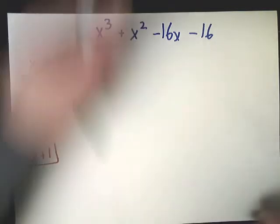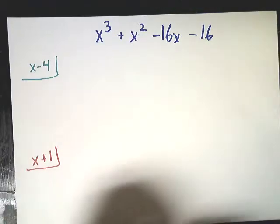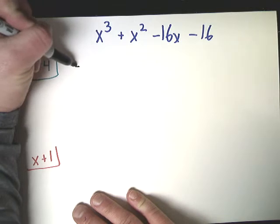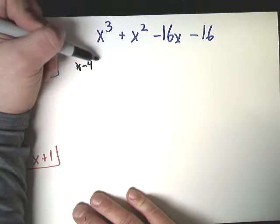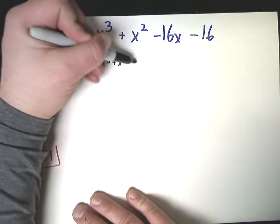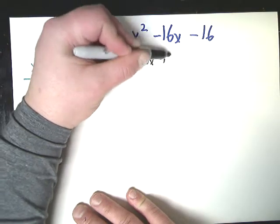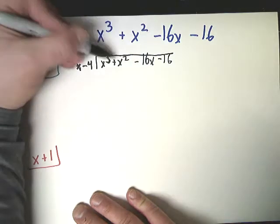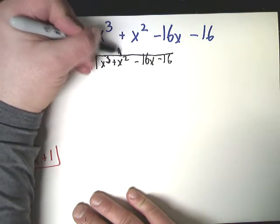So the first one, is x minus 4 a factor of this big polynomial at the top. So I'll do x minus 4. It doesn't go in here, but it does here. So I have to put an x there.